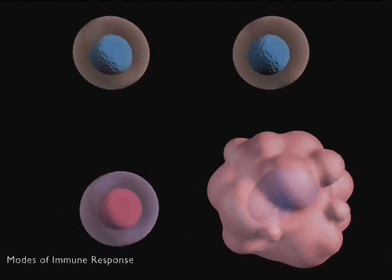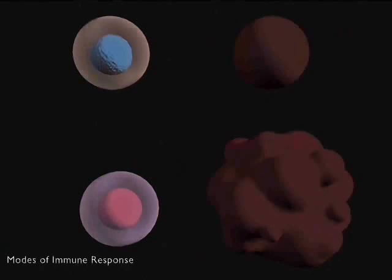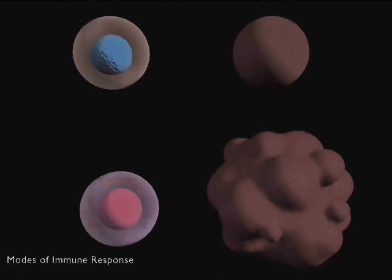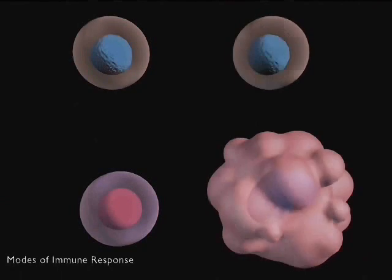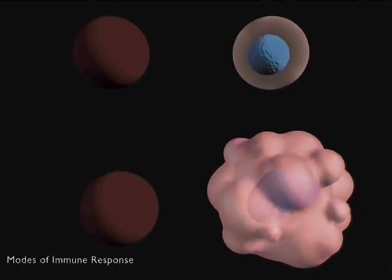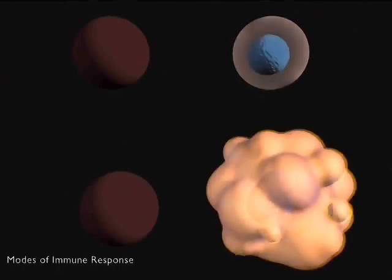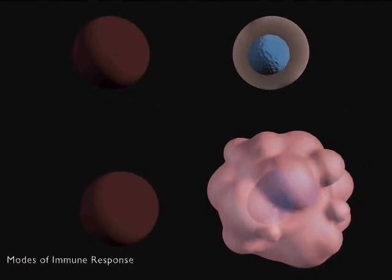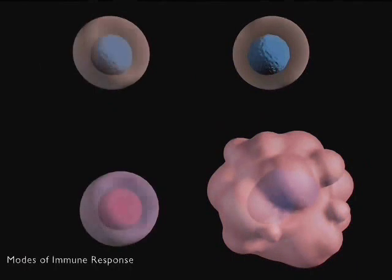The immune system maintains a dynamic balance between the responses mediated by antibodies and those mediated by phagocytes. This is controlled by two different populations of helper T cells. One helps B cells to make antibody, the other activates phagocytic cells.